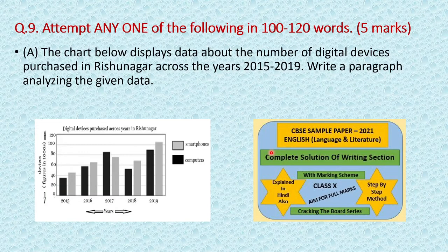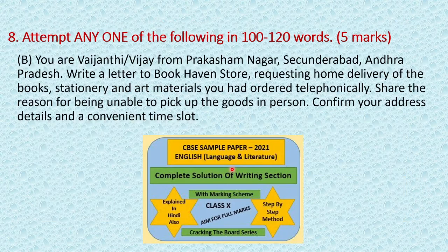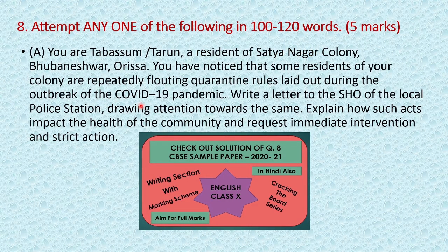I have already discussed the other three questions from the writing section that is a part of question number 9, based on a bar graph — the link is in the description box. Question number 8 — a letter to the Book Heaven store — link is in the description box. Question number 8A, writing a letter to the SHO of the local police station — the link is again in the description box.